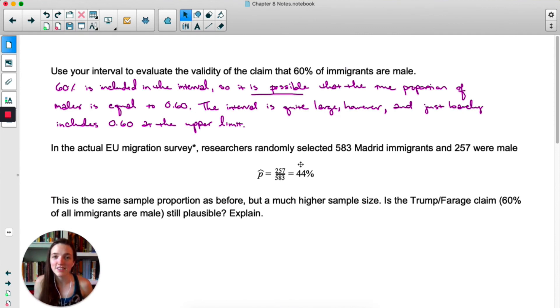However, it's a pretty large interval, all the way from 27% to 60.6%. And that 60% is just barely included, so we should maybe be a bit cautious. But what we saw in that video is that it is plausible that the proportion of migrants who are male is 60%. So now that we've done the mock data, let's see the actual survey.